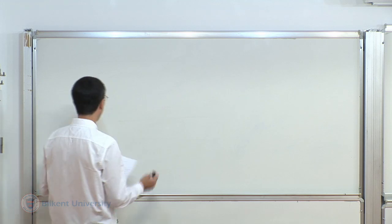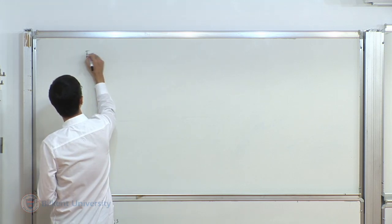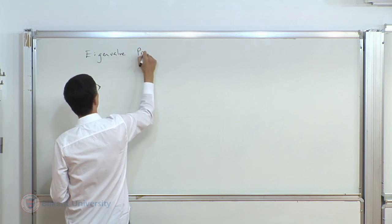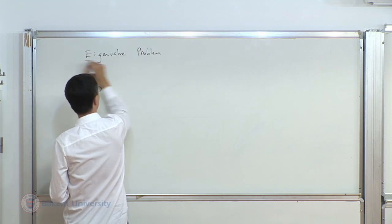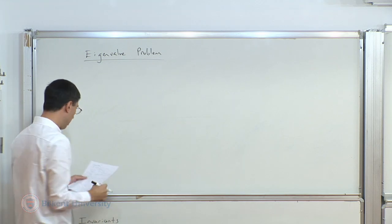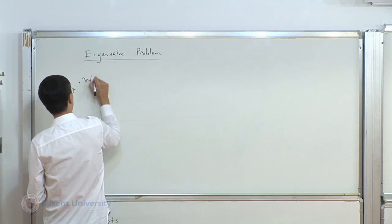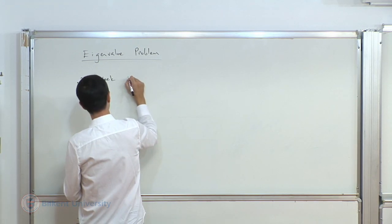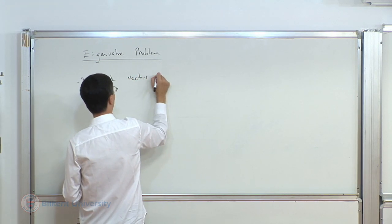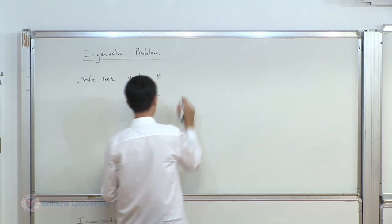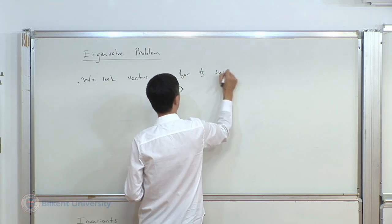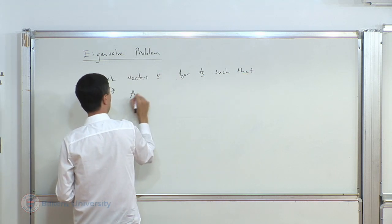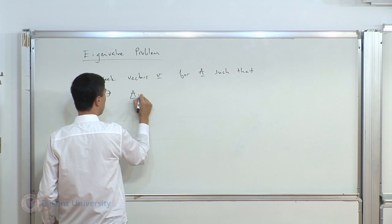After expanding and dividing by the triple product, the terms with three appearances of A give the determinant of A, two appearances give the second invariant times lambda squared... Actually collecting terms: the expansion gives minus lambda cubed plus the first invariant times lambda squared minus the second invariant times lambda plus the third invariant — precisely the characteristic equation apart from a sign.